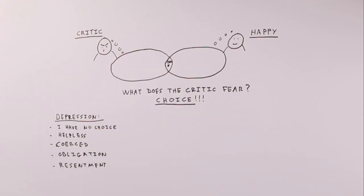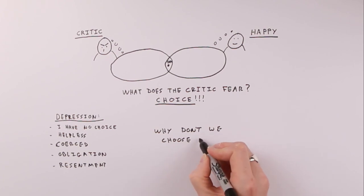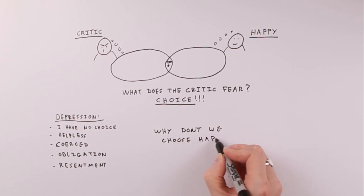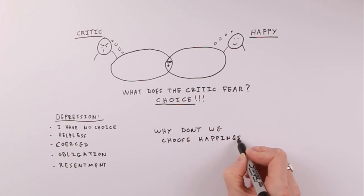So the inner critic has managed to pull something off here. It's made us convinced that we can't choose this option. How does it do that? And that's what this video is really all about. In other words, why on earth, why don't we choose happiness? And that is the question that many people have looked at. And I'm going to show you right now.